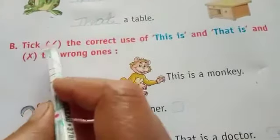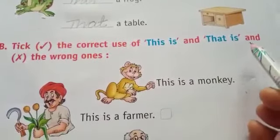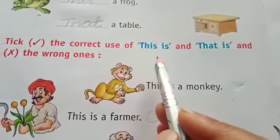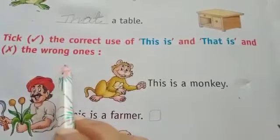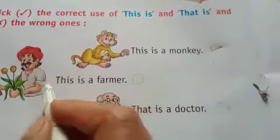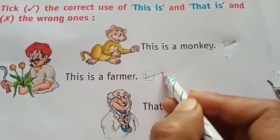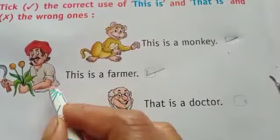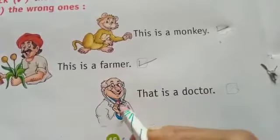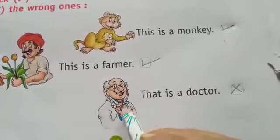Next: tick the correct use of 'this is' and 'that is', and cross the wrong ones. जो सही है उसमें सही टिक लगाना है, जो wrong है उसमें cross करना है. This is a monkey — monkey हमारे पास है, तो correct sentence है. This is a farmer — farmer हमारे पास है, तो यह correct sentence है. नज़दीक के लिए हम 'this' का यूज़ करते हैं. एक sentence incorrect है क्योंकि doctor हमसे दूर नहीं है, पास है — इसलिए वह sentence wrong है.